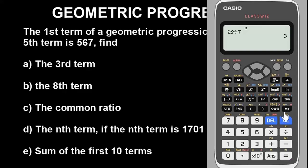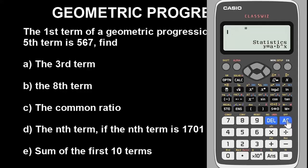Alternatively, you can use the fifth term divided by the fourth term. Either way you get the same common ratio result. Whichever approach you use — consecutive term divided by the previous term — the result is the same. This just illustrates it; replicate whichever method suits the question you are given.